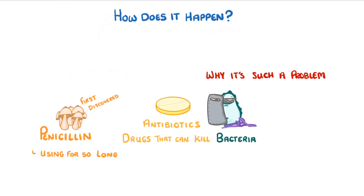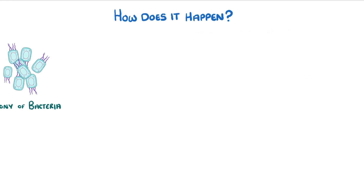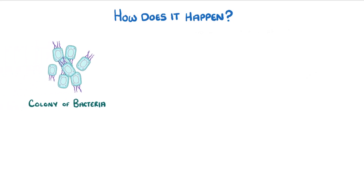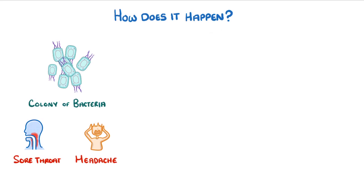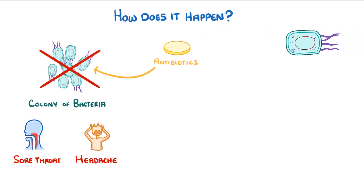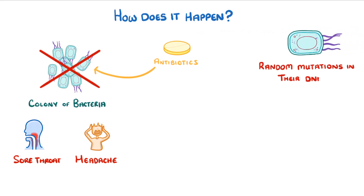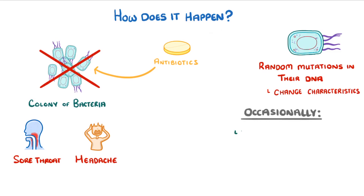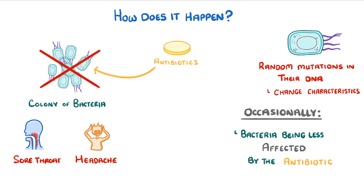The first thing we need to understand is how this resistance happens. Imagine you had a colony of bacteria inside you giving you a sore throat and a headache, so you go to the doctor and they give you some antibiotics. The hope is that the antibiotics will kill the bacteria. However, like all organisms, bacteria sometimes develop random mutations in their DNA which can change their characteristics, and very occasionally these changes result in the bacteria being less affected by the antibiotic — in other words, it's become resistant.